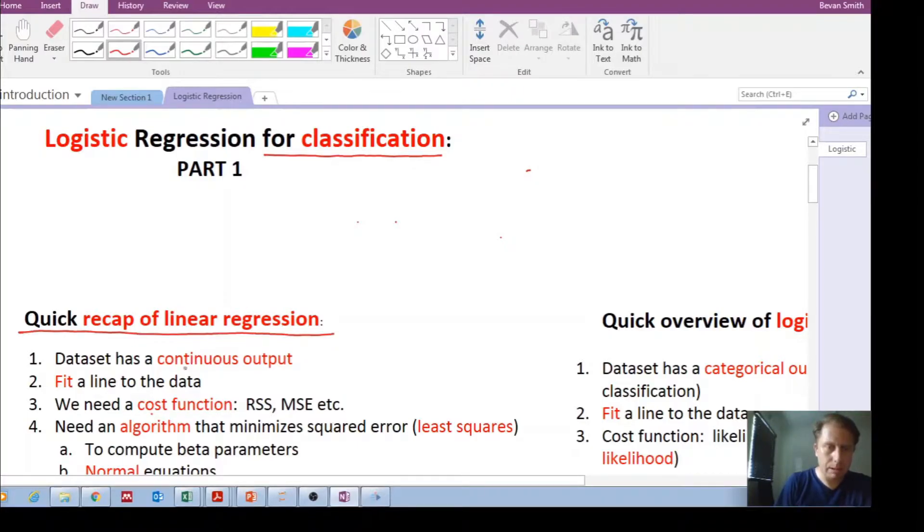Number one, for linear regression, remember that the output is continuous. For example, what are we predicting? We are predicting a continuous output, say house prices from $500,000 to a million dollars. So it can be any number between that.